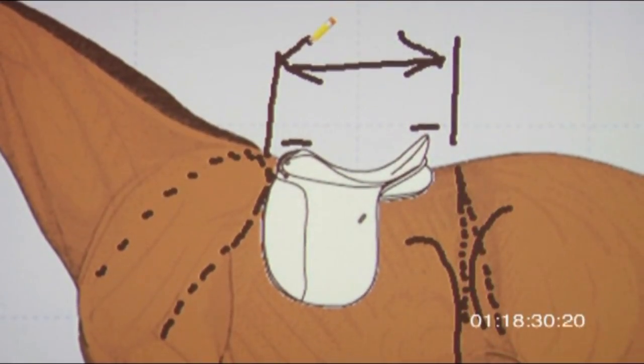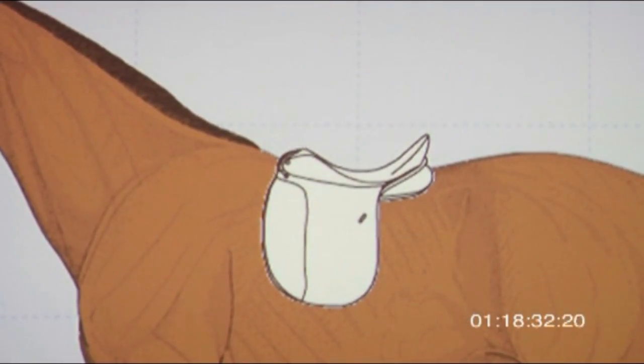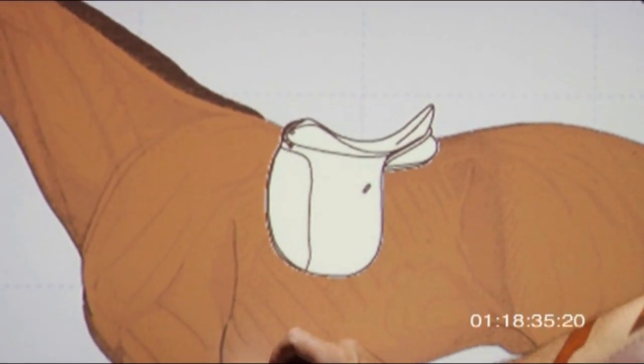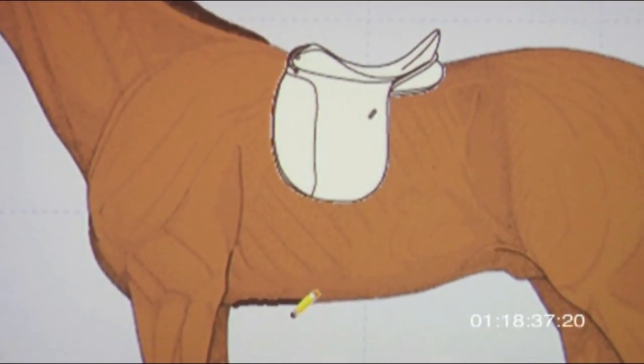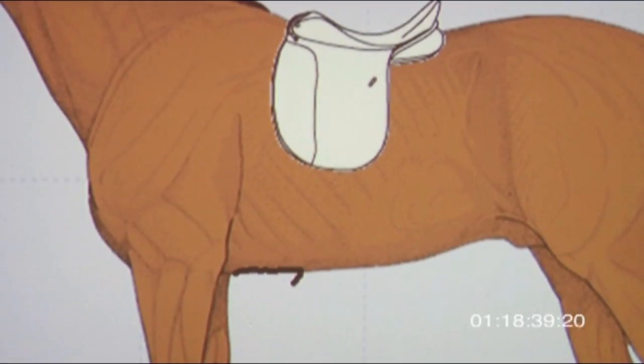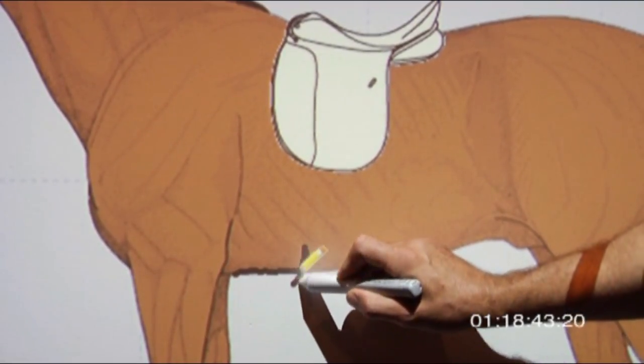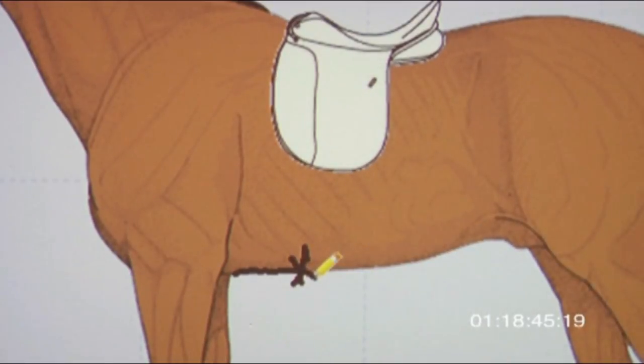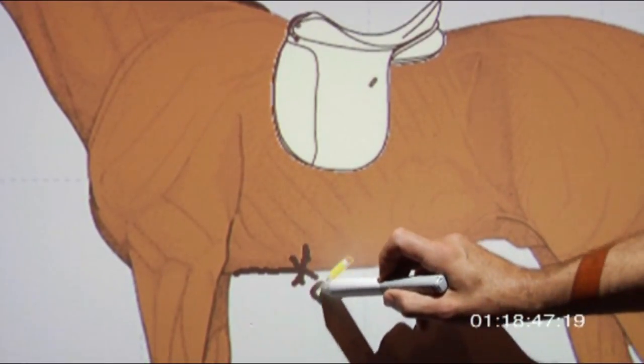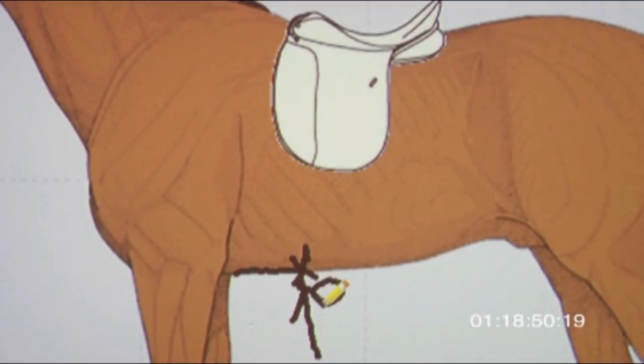The next thing is the girth. The sternum is approximately six inches long, some horses up to eight. The girth should never pass this point because we have the solar plexus here. When we push against that spot, the horse will actually move away from it. It's a very sensitive area.